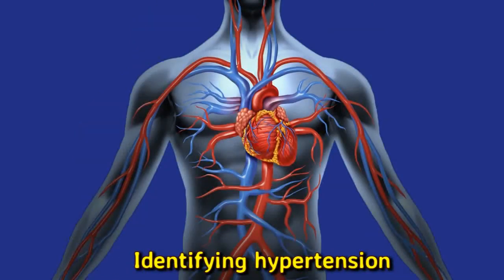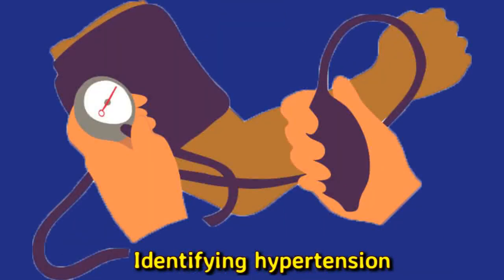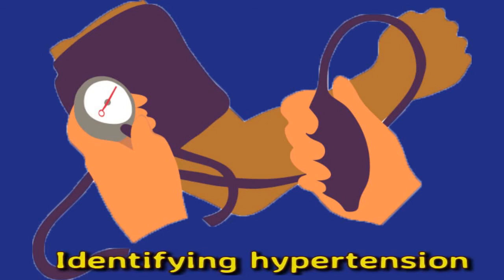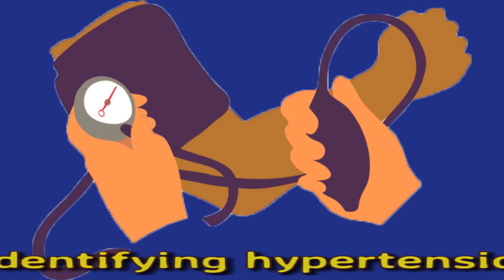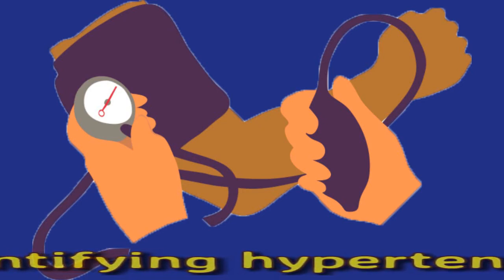A blood pressure reading displays two numbers representing systolic and diastolic pressure. Systolic pressure appears at the top and represents the amount of pressure in the arteries between heartbeats. The American Heart Association categorizes blood pressure readings as follows: normal is systolic below 120 and diastolic below 80; elevated is systolic 120 to 129 and diastolic below 80; hypertension stage 1 is systolic 130 to 139 or diastolic 80 to 89; hypertension stage 2 is systolic 140 or higher or diastolic 90 or higher.